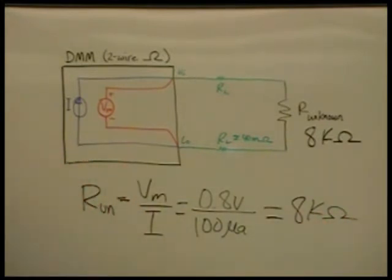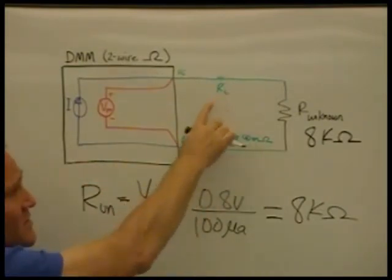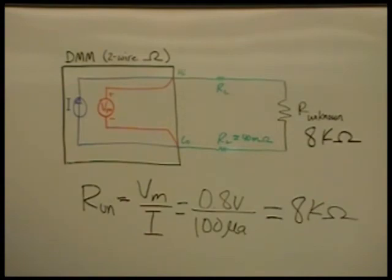So again, this video is just designed to give you an overview of how resistance measurements are made. And the main thing you need to remember about a two-wire-ohm measurement is that the lead resistance must be negligible compared to the unknown resistance you are measuring.